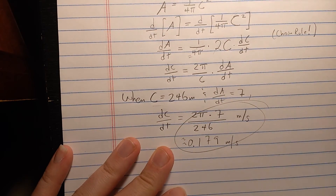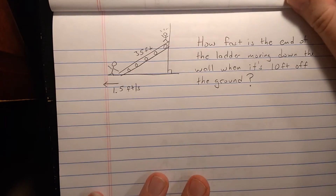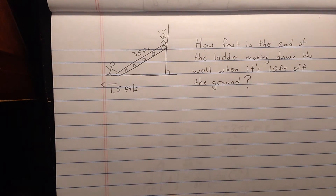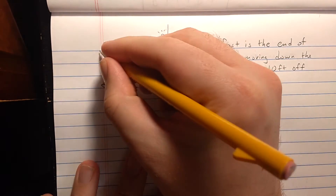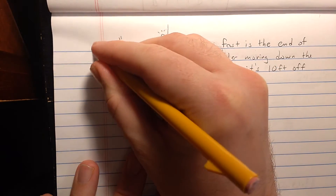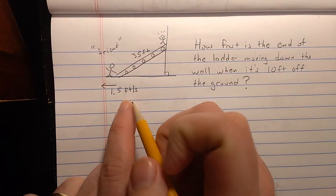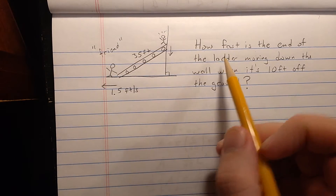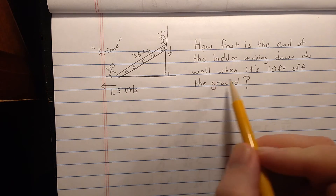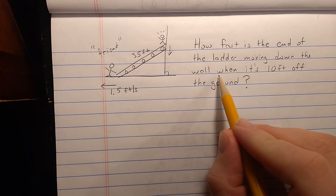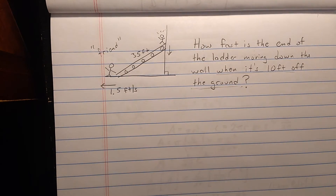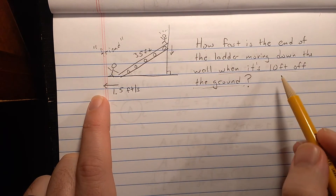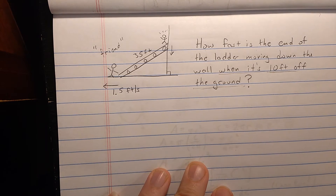Let's look at a second problem — a classic related rates problem. You have a ladder leaning against a wall; the length of the ladder is 35 feet. Someone starts pulling the base of the ladder out at 1.5 feet per second, so the top of the ladder will start moving down. The question is: how fast is the top of the ladder moving down the wall when it's 10 feet off the ground? As in the previous problem, we're interested in that particular time when it's 10 feet off the ground.